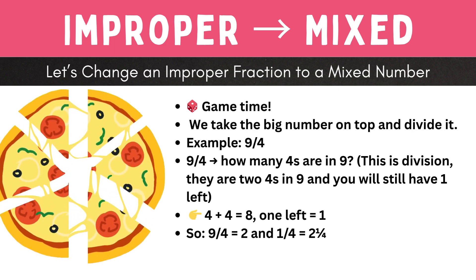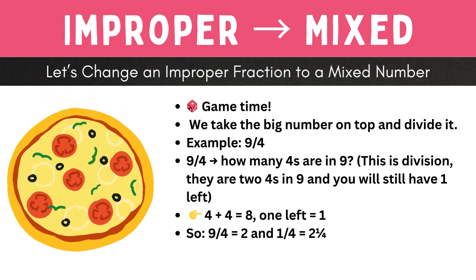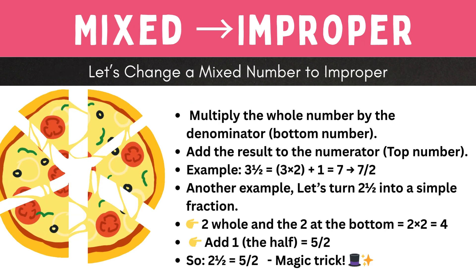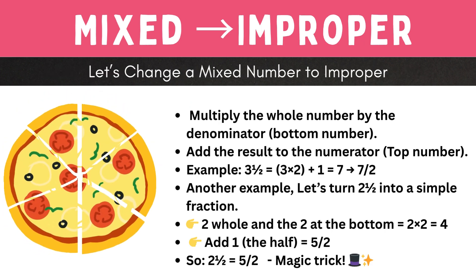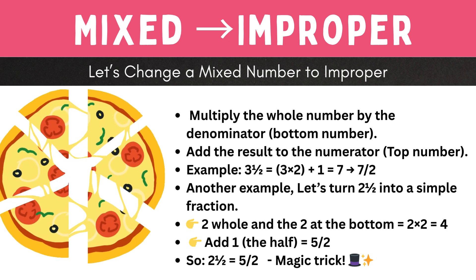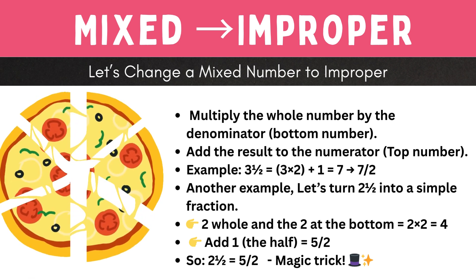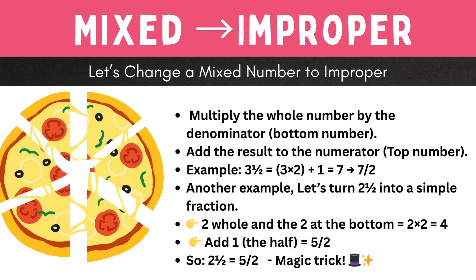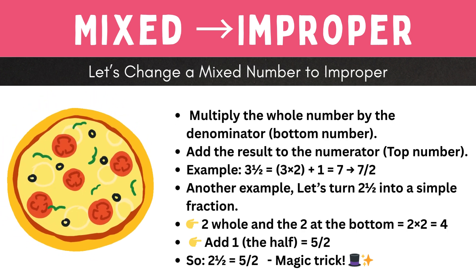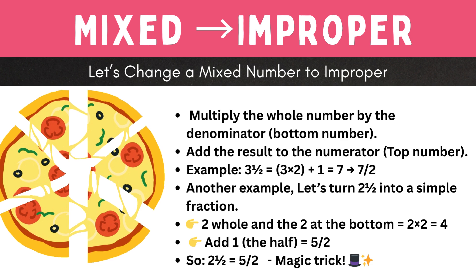Now let's go the other way. Let's change a mixed fraction to an improper fraction. Turn two and a half into an improper fraction: two times two equals four, plus one equals five — five over two. Boom! Fraction magic complete.